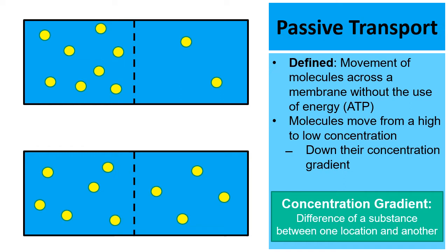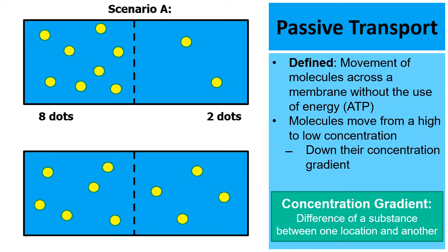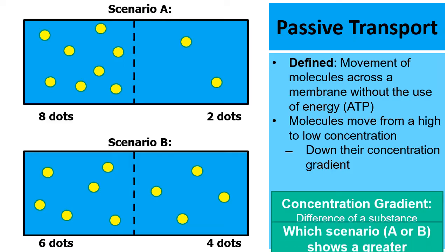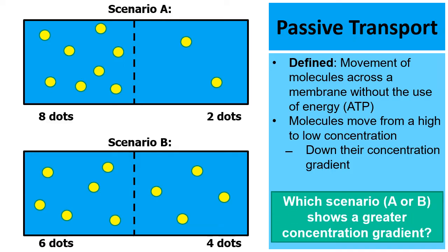In my picture here, I have two scenarios. In scenario A, on the left there are eight dots and on the right there are only two. In scenario B, there are six dots on the left and four dots on the right. My question is: which scenario, A or B, shows a greater concentration gradient?